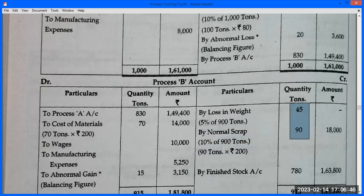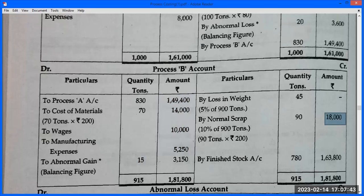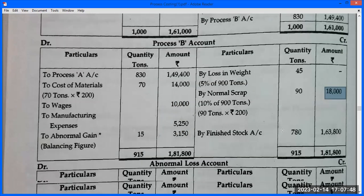Total normal deductions = 45 + 90 = 135 tons. Expected output = 900 − 135 = 765 tons. Actual output given = 780 tons. Since actual output (780) exceeds expected (765), there is an abnormal gain of 15 tons. On credit side write: Finished Stock — only quantity 780 tons for now; amount to be filled later. On debit side, write: Abnormal Gain = 15 tons.